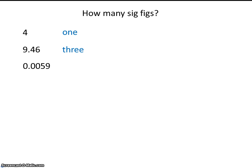Now here we have some zeros. You'll have to recall the rules for zeros. Remember there are three types of zeros: leading zeros, trapped zeros, and trailing zeros. Leading zeros — zeros that come before a number — are not significant, so this number has 2 sig figs. Now this is a trapped zero, a zero that's trapped in between two significant numbers, and trapped zeros are significant, so this number has 3 sig figs.